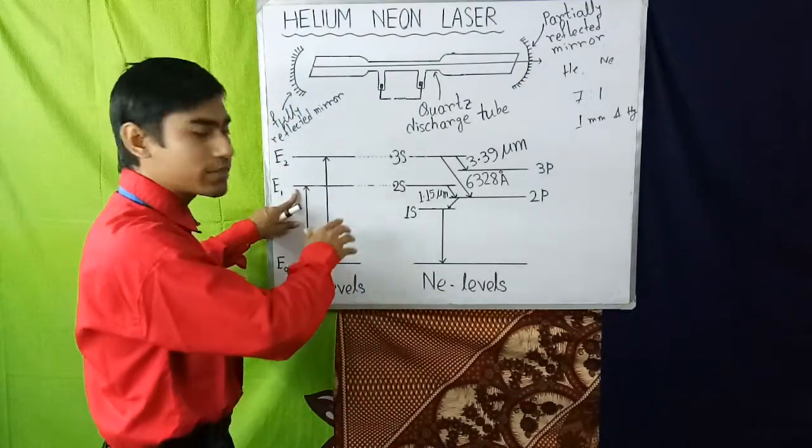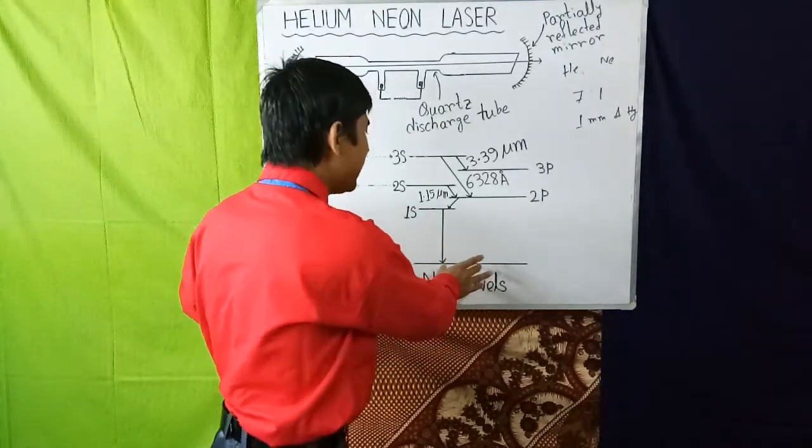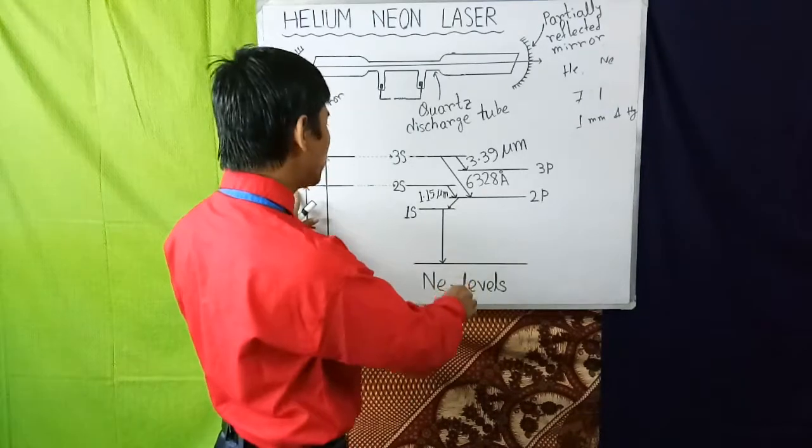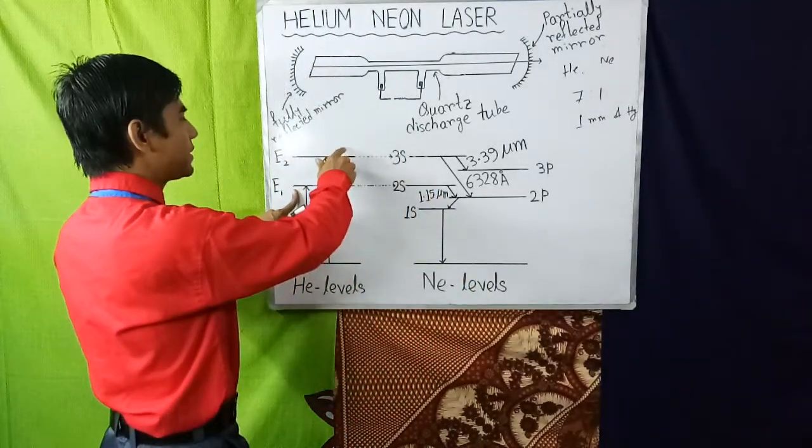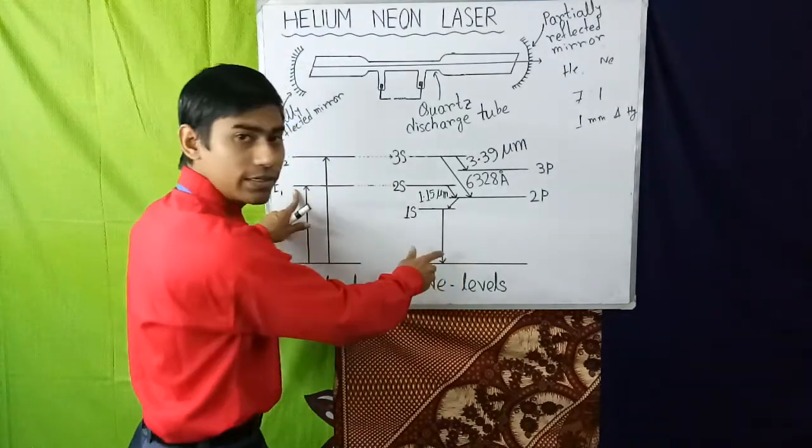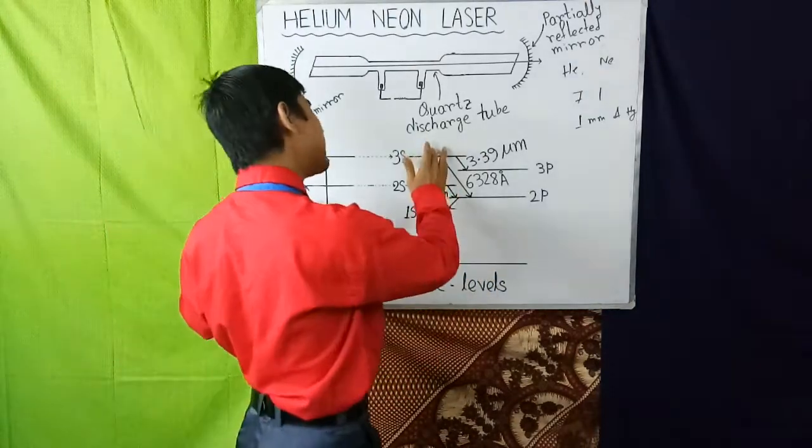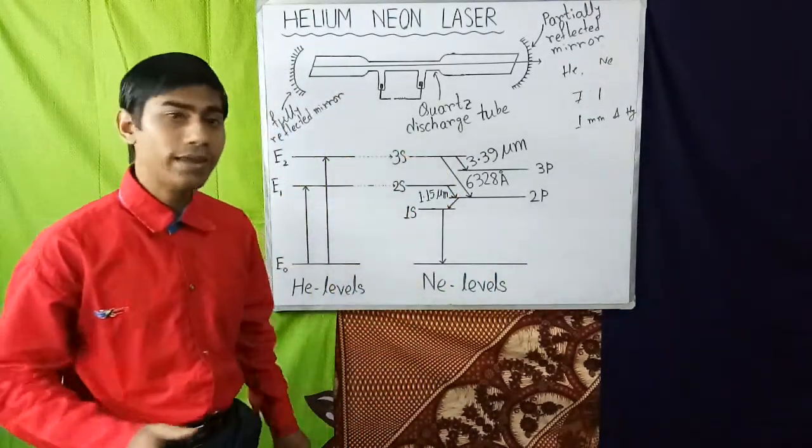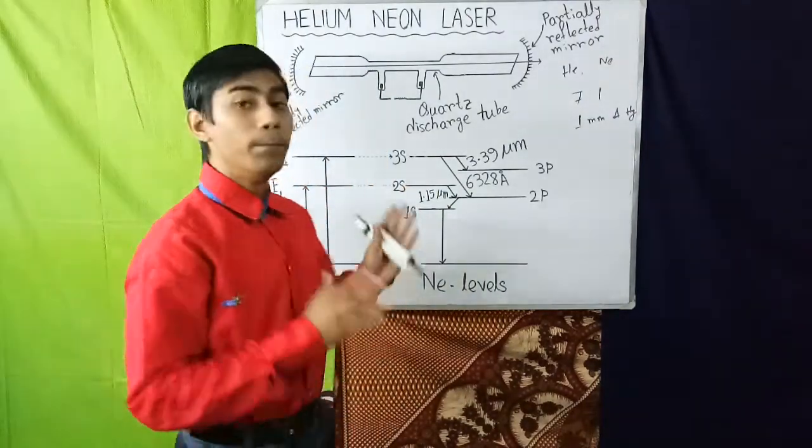And when helium atom in the metastable state E2 collides with neon atom in the ground state, neon atoms are easily excited and go to the 3S level. Now here 2S and 3S levels are metastable states and quickly attain population inversion relative to lower 2P and 3P levels.